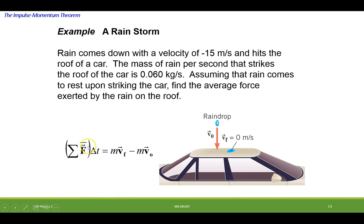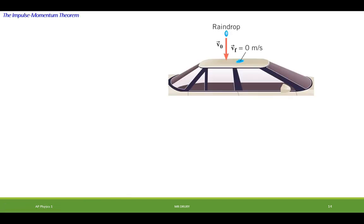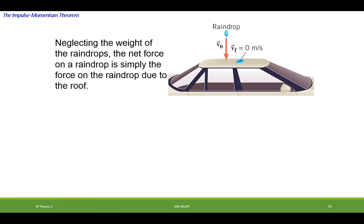We'd like to know what the average force is. So what is the average force? It would have to do with, we'd have to use the impulse momentum theorem. Because we have everything we need other than the average force. We're going to neglect the weight of the rain. We're just worrying about the force of the roof on the raindrop itself.